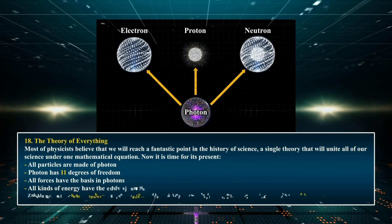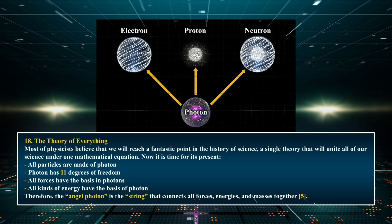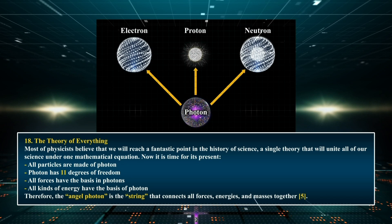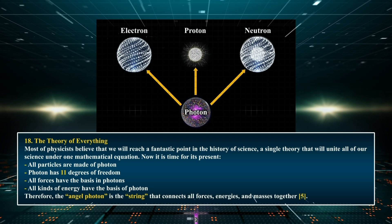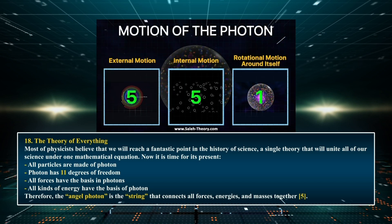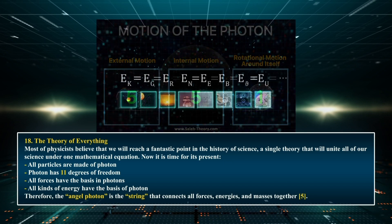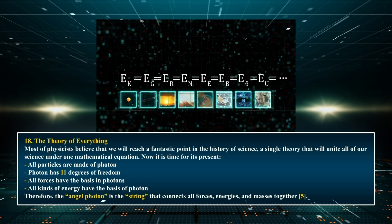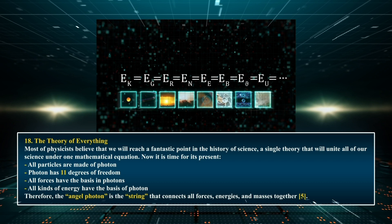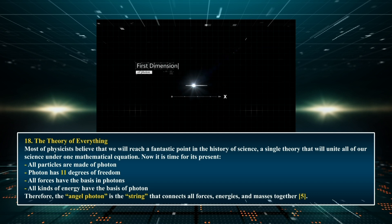Chapter 18: The Theory of Everything. Most physicists believe that we will reach a fantastic point in the history of science — a single theory that unites all of science under one mathematical equation. Now it is time to present it. All particles are made of photon. The photon has 11 degrees of freedom. All forces and all kinds of energy have their basis in photons. Therefore, the photon is the string that connects all forces, energies, and masses together.